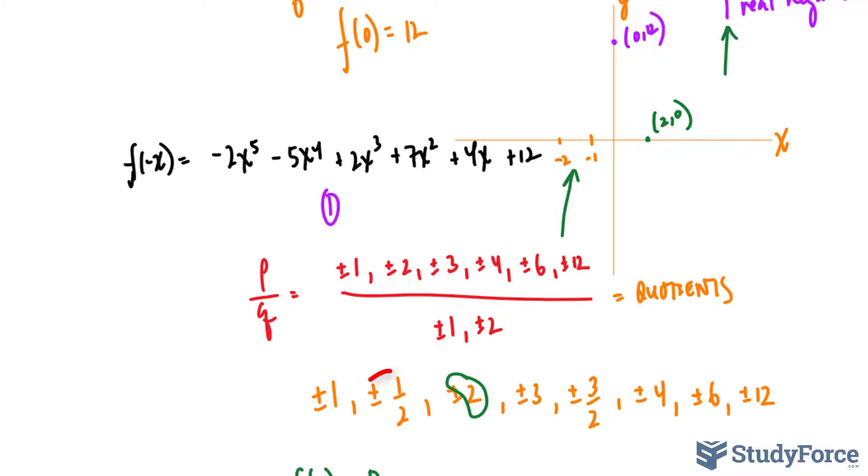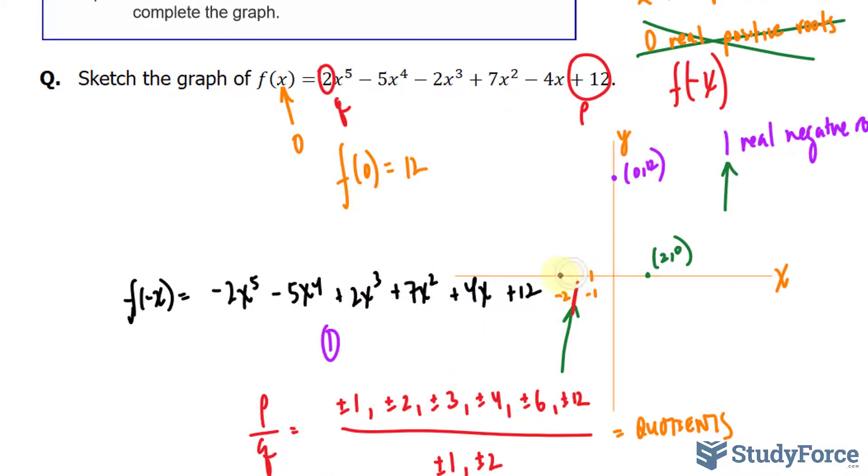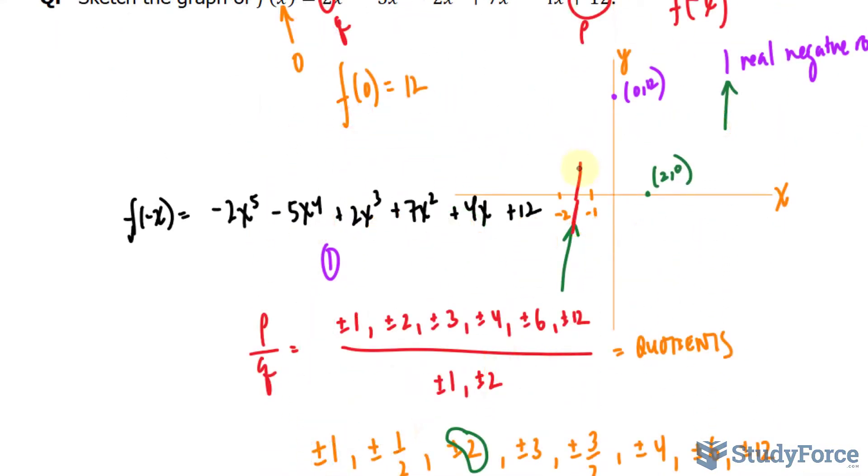Interestingly, if you plug in negative 0.5 into the function, you will end up with an output of 0. And remember, negative 0.5 was one of the quotients we found earlier, so let me show that on the graph. I'll put a line randomly between these two. And f at negative 1 happened to be 18. So it should go up, and then eventually it will cross the y-axis. And we'll have a point right here as well. Let's say that it is negative 2 and 80. That's one of the negative real roots that we discussed. This would be negative 1 and 18. And our sketch is coming along just fine.